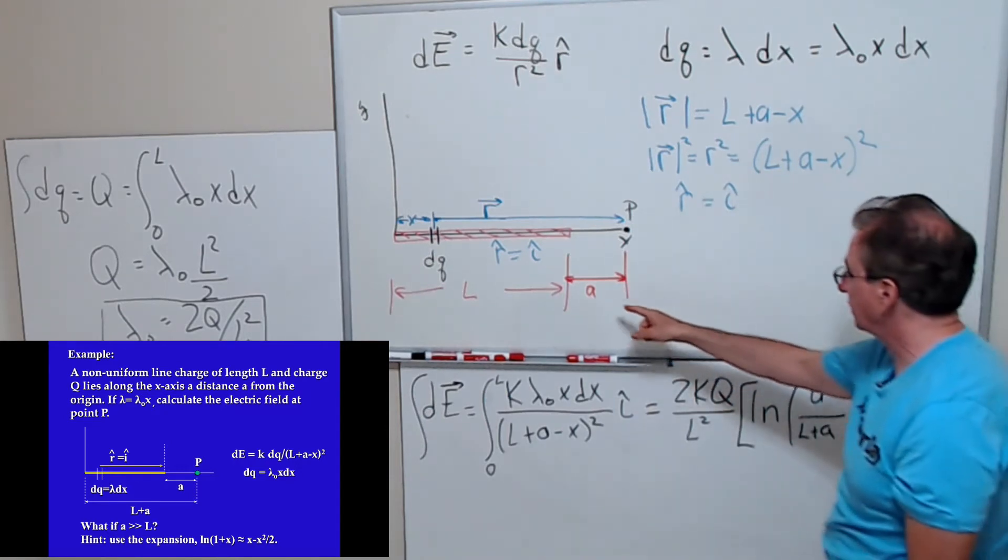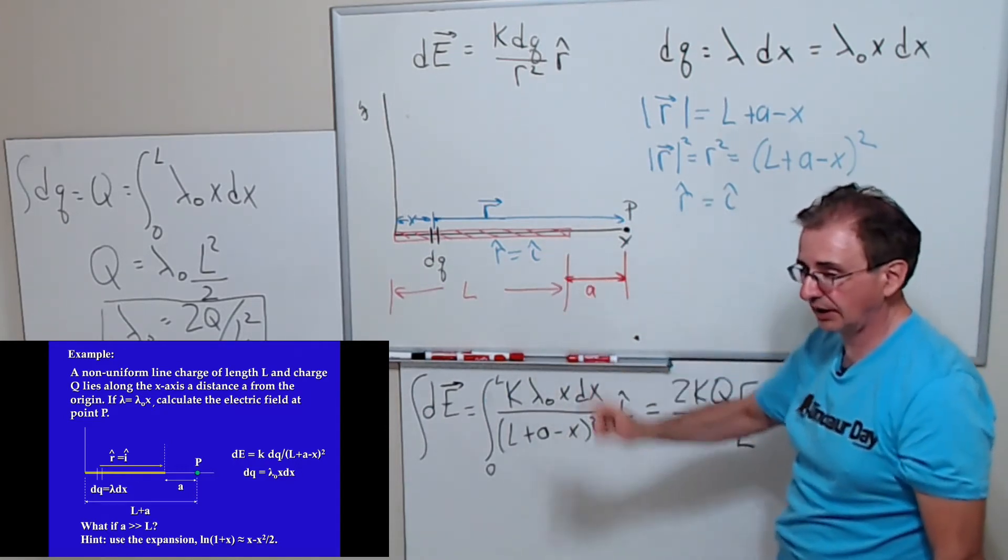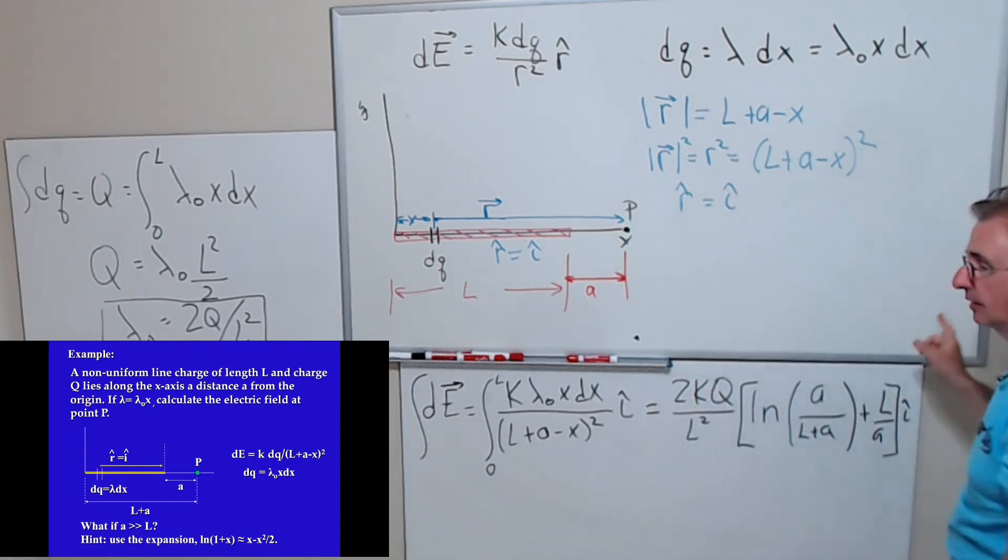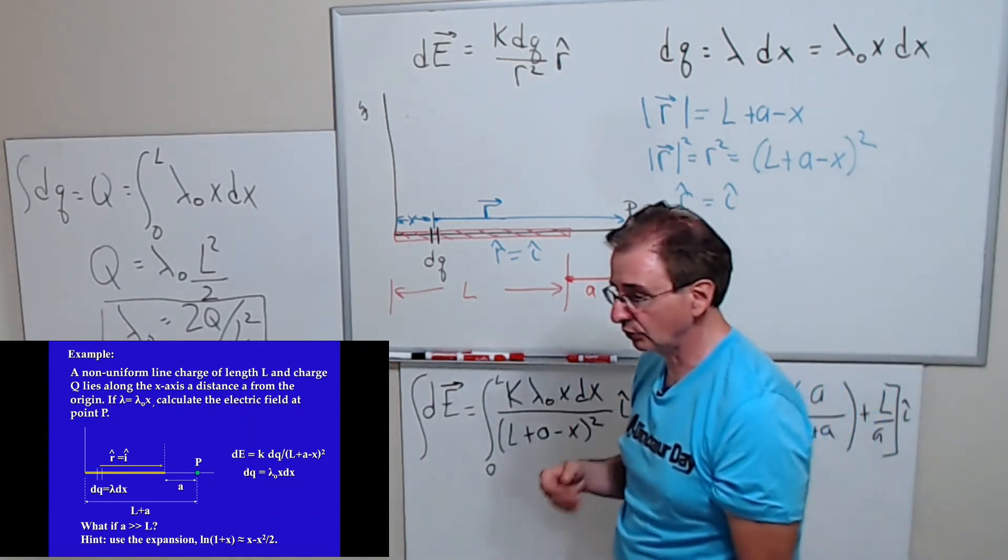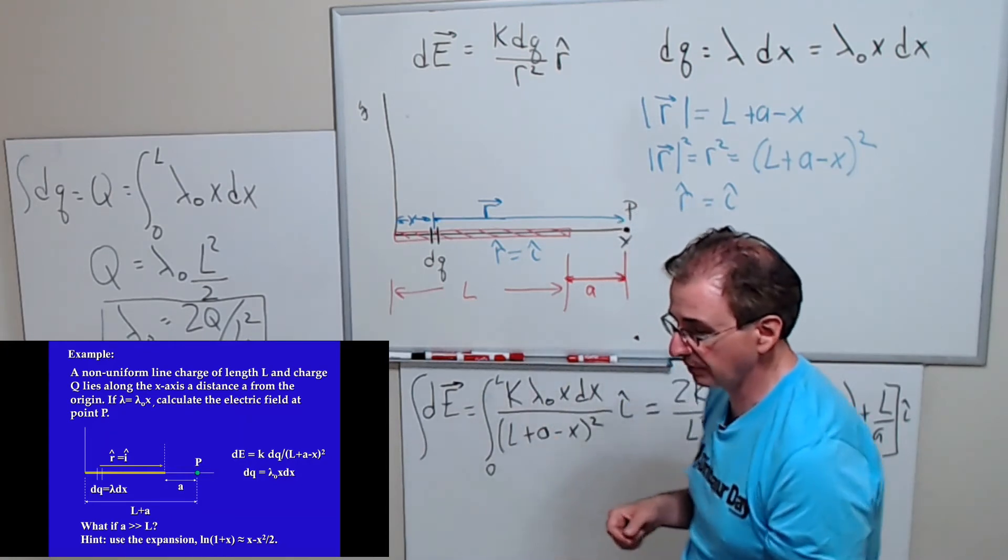What if A is way bigger than L? In other words, what if you're really far away? What's the rod going to look like? It's going to look like a dot, like a point. So if A is much, much bigger than L, then this expression in the limit of A much, much bigger than L should give you the expression for the electric field due to a point charge.